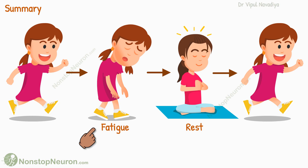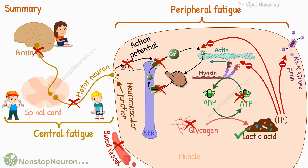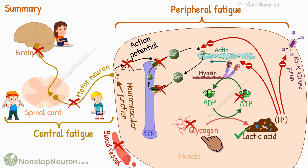In summary: muscle fatigue is the temporary decline in muscle performance and capacity due to prolonged or intense exertion. It plays a protective role and is reversible with rest. Central fatigue occurs due to decreased inputs to the motor neuron or alteration in its excitability. Peripheral fatigue occurs due to impairment in the generation or propagation of action potential, impairment in the release and reuptake of calcium at the sarcoplasmic reticulum, depletion of energy sources such as ATPs and glycogen, accumulation of metabolic waste products such as lactic acid, and impairment in blood supply.